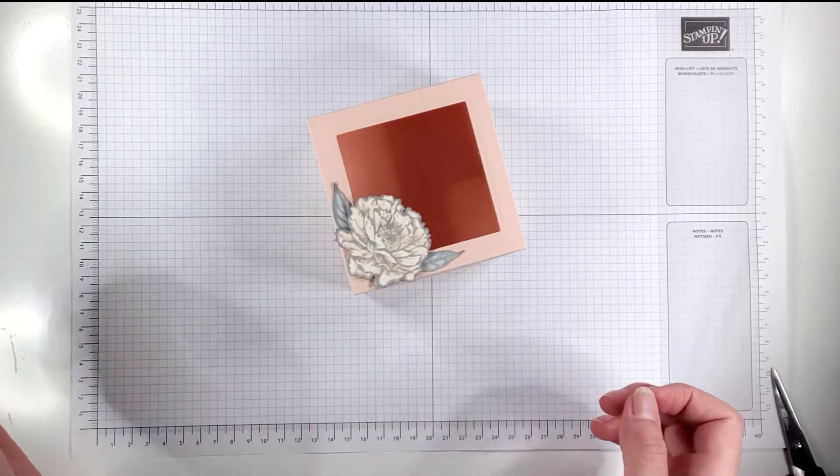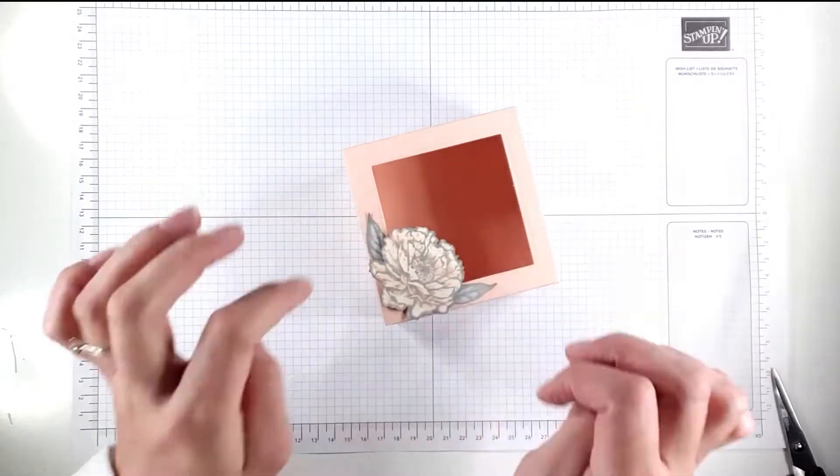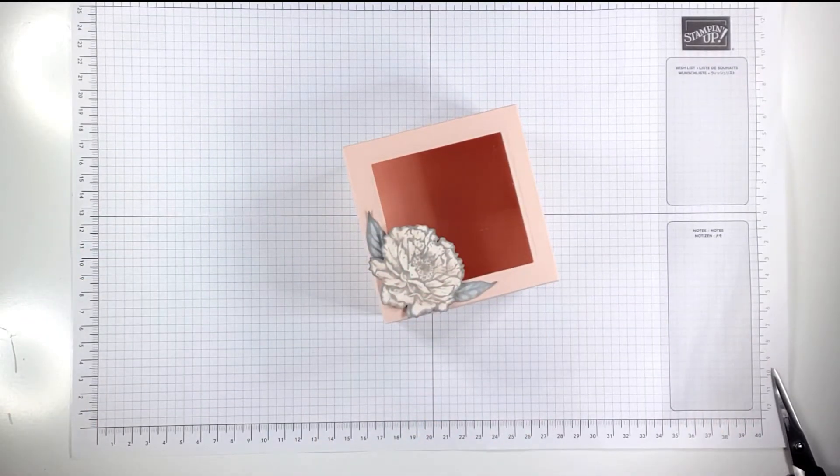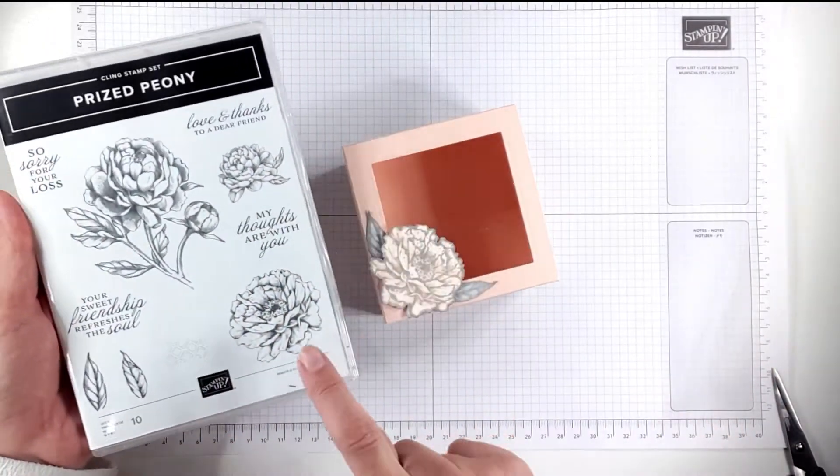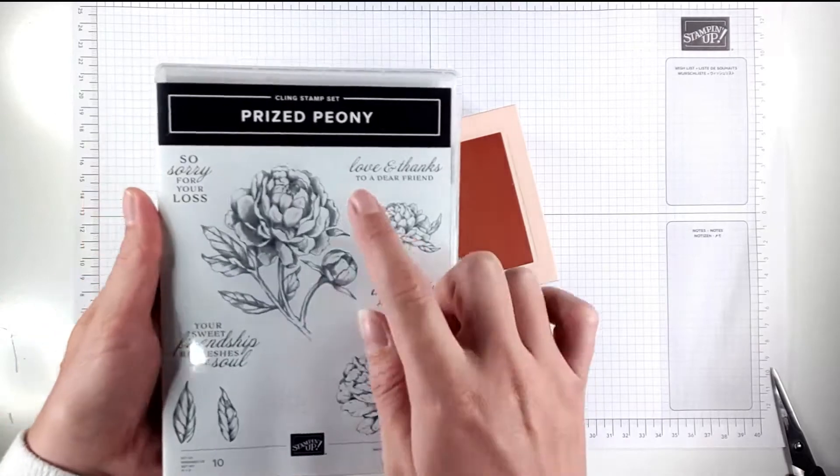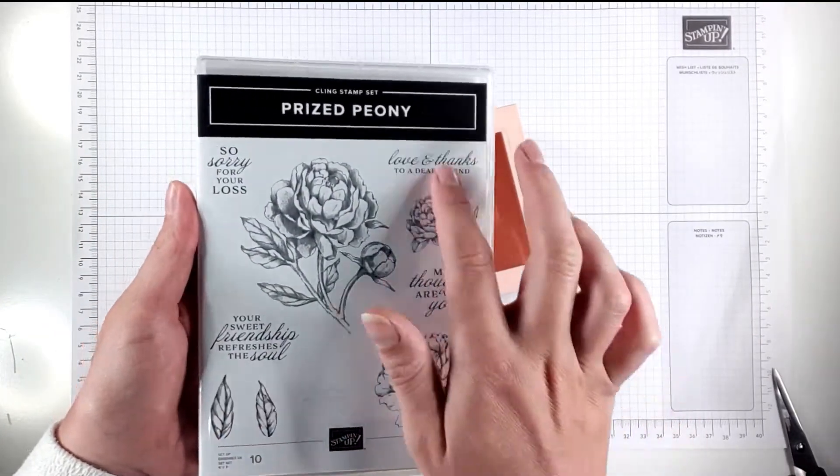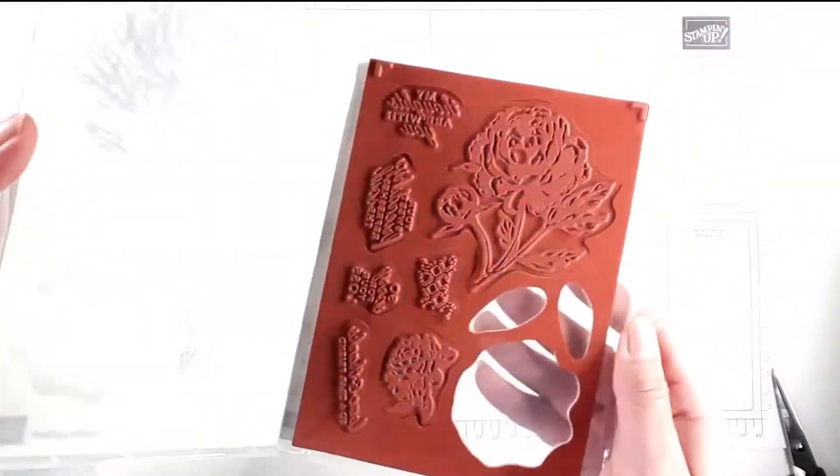Good morning and welcome to Sarah's Stamping Retreat. Today we're going to create this lovely little window box with the peony on it. This peony is from a stamp set from the new catalogue called Prized Peony. This is the stamp that we're going to use today - it's got this really large peony and some sentiments and a few little pieces.